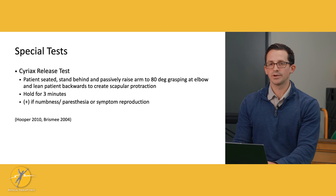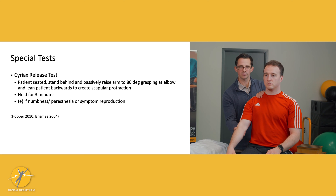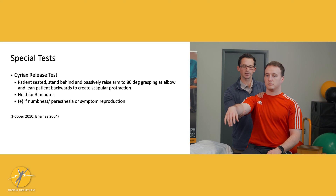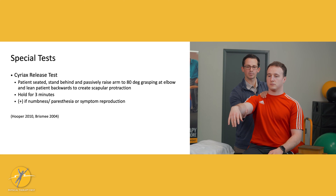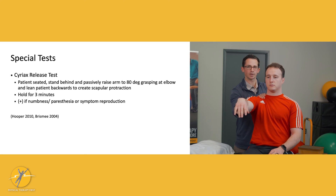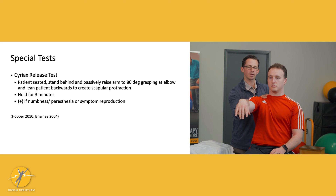The Cyriax release test involves passively elevating the arm to about 80 degrees. Stand behind the patient and lean them backwards while keeping their arm in position, causing protraction of the scapula. Hold this position for three minutes. Any symptom reproduction that occurs would indicate a positive test for neurogenic TOS.